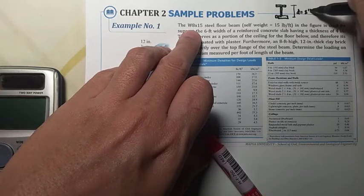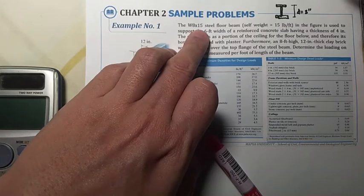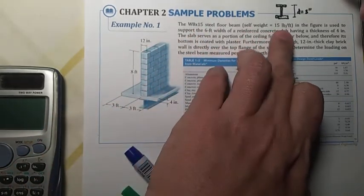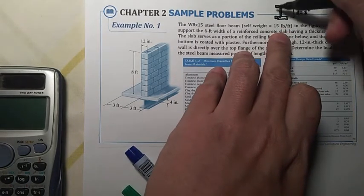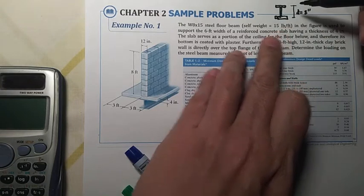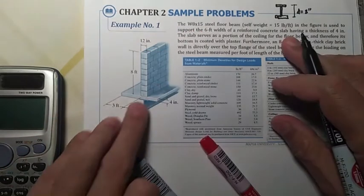And the 15 in the designation means the self-weight is 15 pounds per foot. So for every one foot linear length perpendicular to this section, the weight is 15 pounds. So that's what the designation 8 by 15 means.